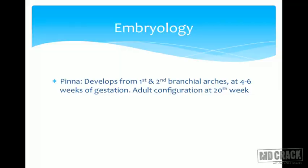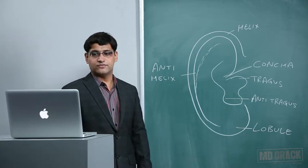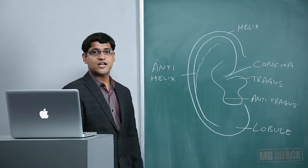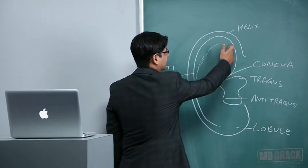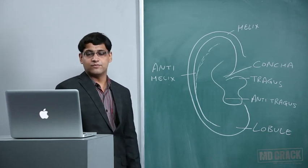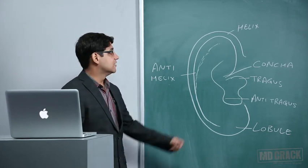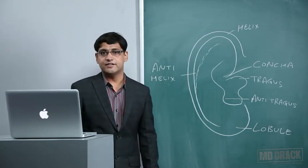Embryologically, the pinna develops from the first and second branchial arches at 4-6 weeks of gestation, and the adult size of pinna is configured at the 20th week. The tragus and crus of helix develop from the first arch. The rest of the pinna - that is helix, anti-helix, and lobule - they all develop from the second branchial arch.